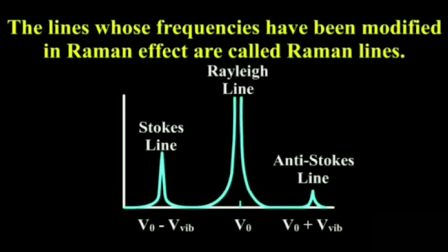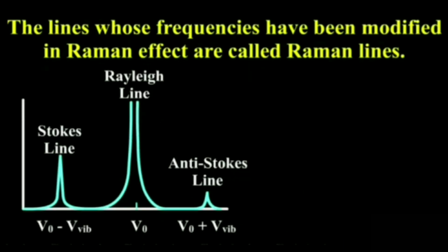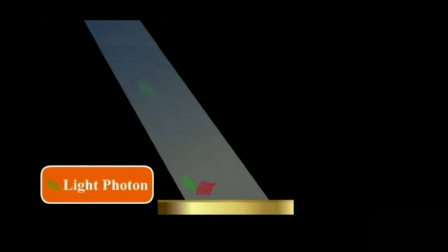What is Raman spectrum? The series of lines in the scattering of light by atoms and molecules is known as the Raman spectrum. The Raman effect can be easily understood by considering the scattering of photons of the incident light with the atoms or molecules.